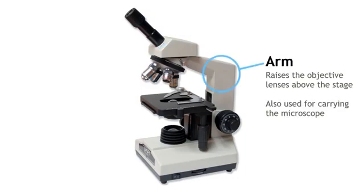The arm. The arm is like the backbone to the microscope. It raises the objective lenses above the stage and is also the place where we use to carry the microscope from one place to another.